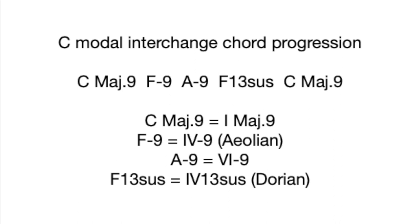Let's analyze the chord progression further. C major 9 is of course the tonic or I chord in the key. F minor 9 is borrowed from the C natural minor scale. A minor 9 takes us back to the C major chord as the sixth chord. F13 sus, which is essentially an F dominant chord with a suspended third, comes from the C Dorian chord family. So in this chord progression, we have chords borrowed from C major, C minor, and C Dorian.